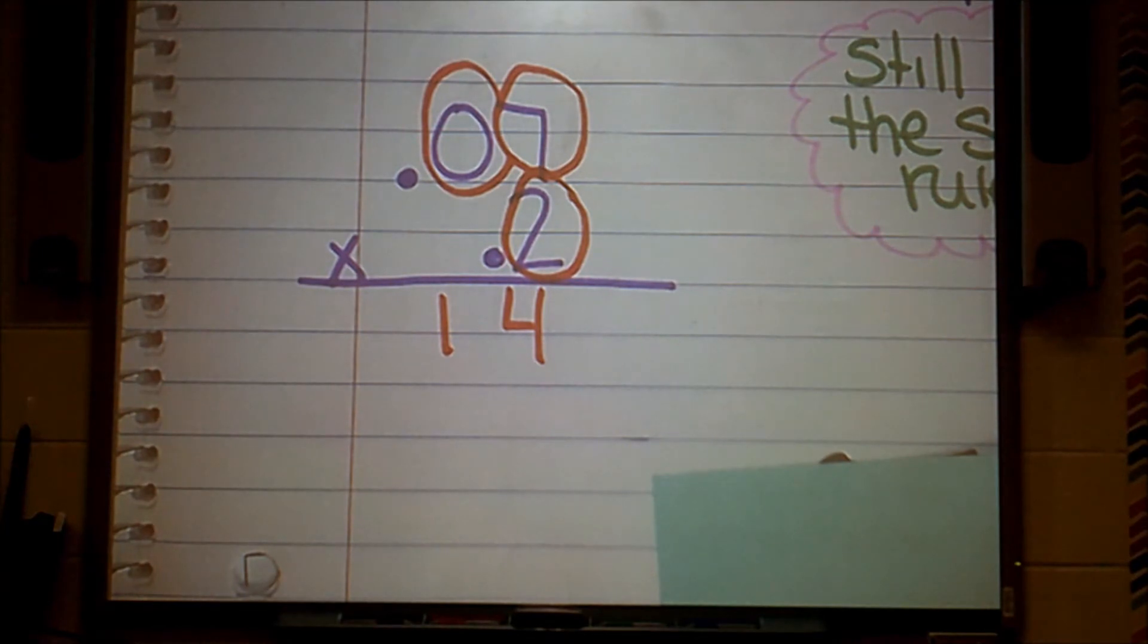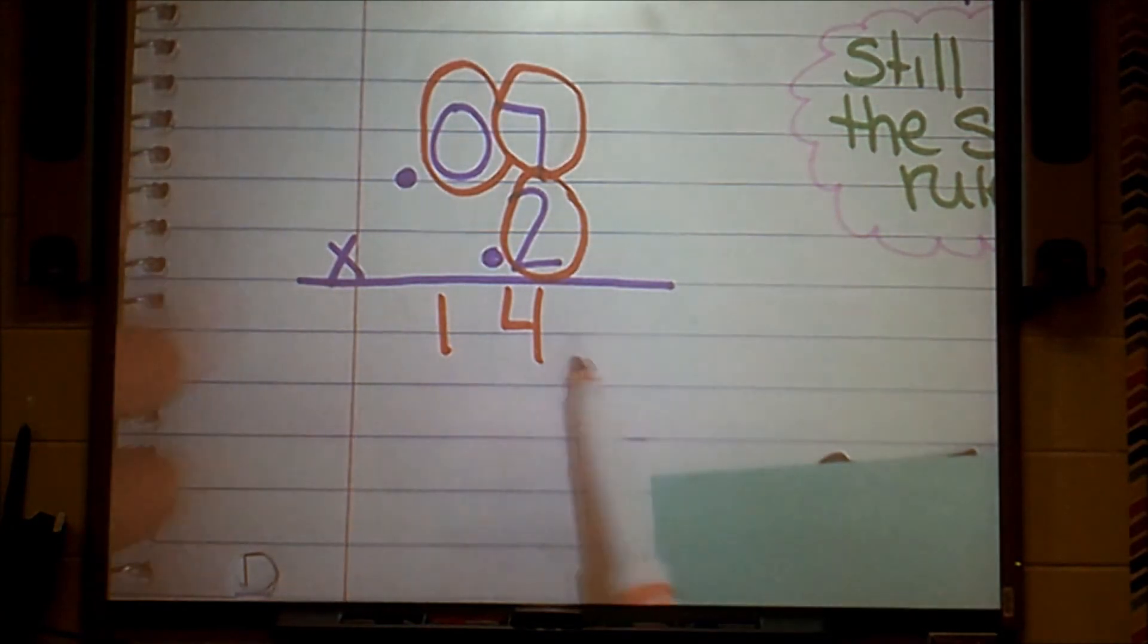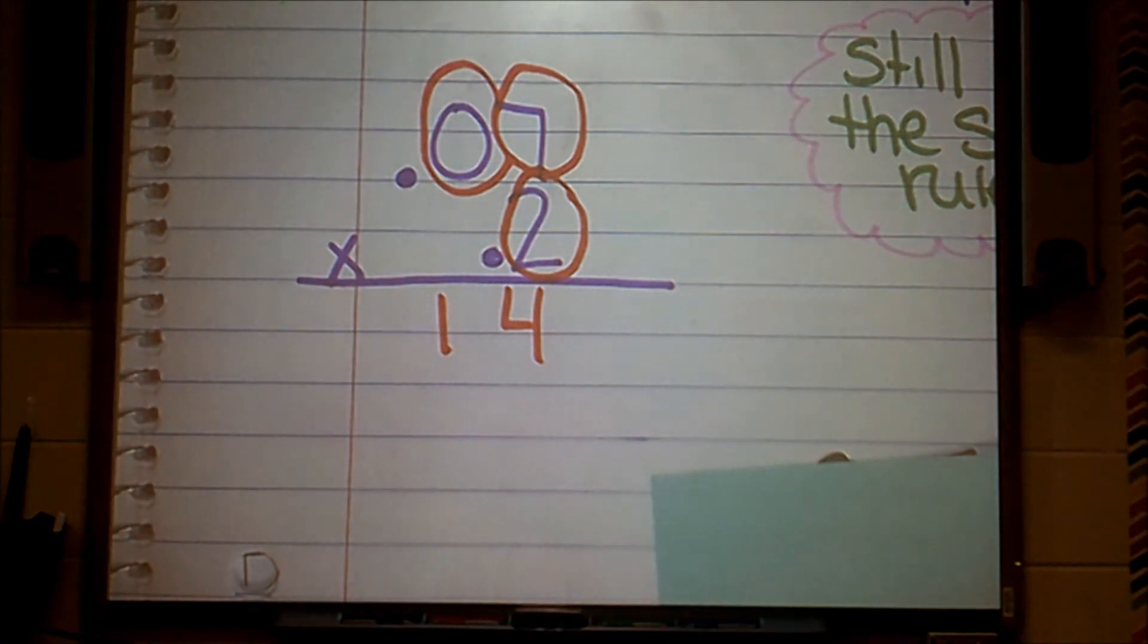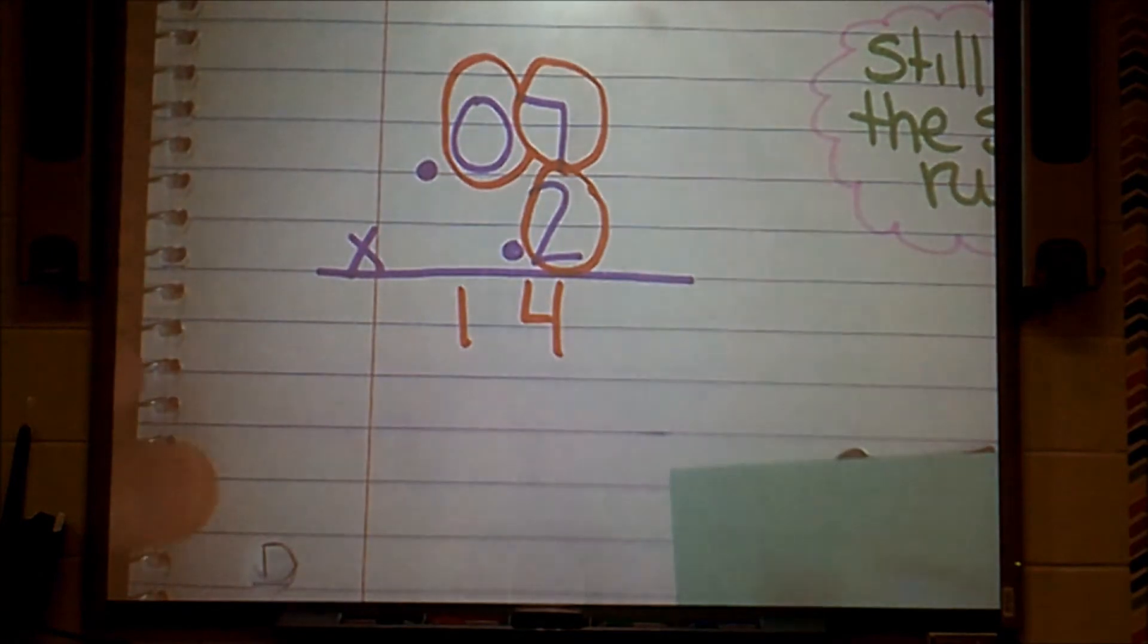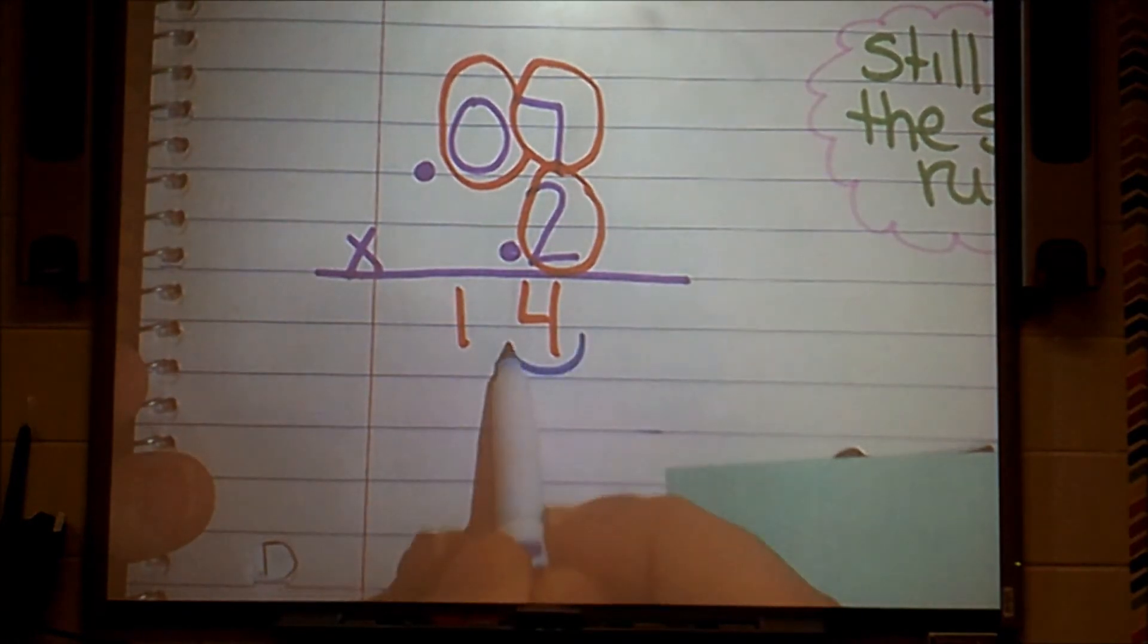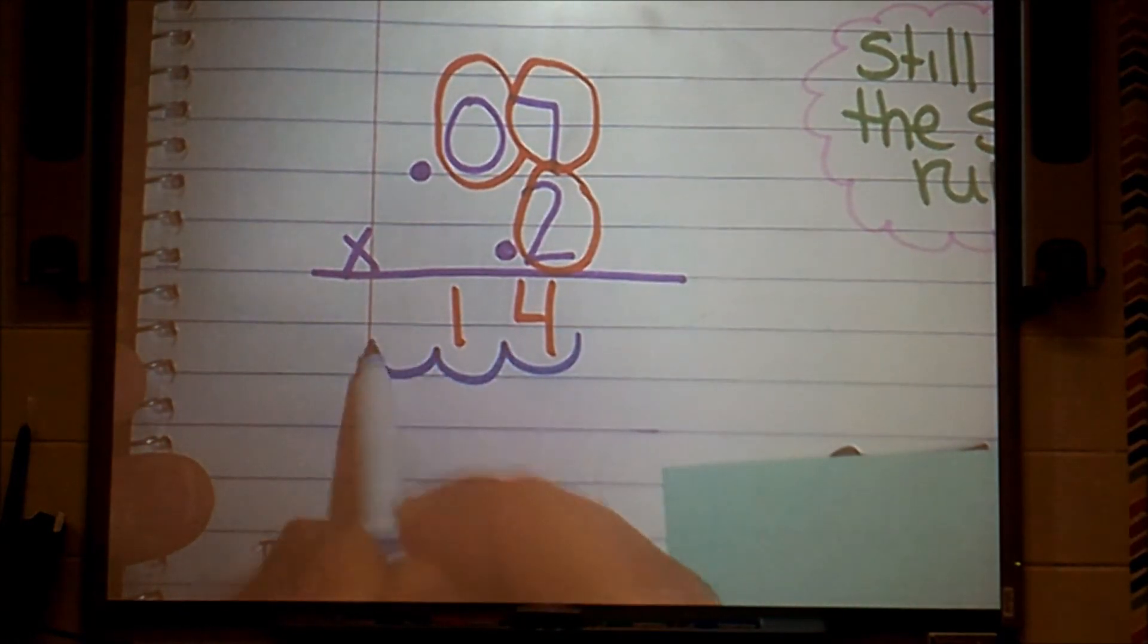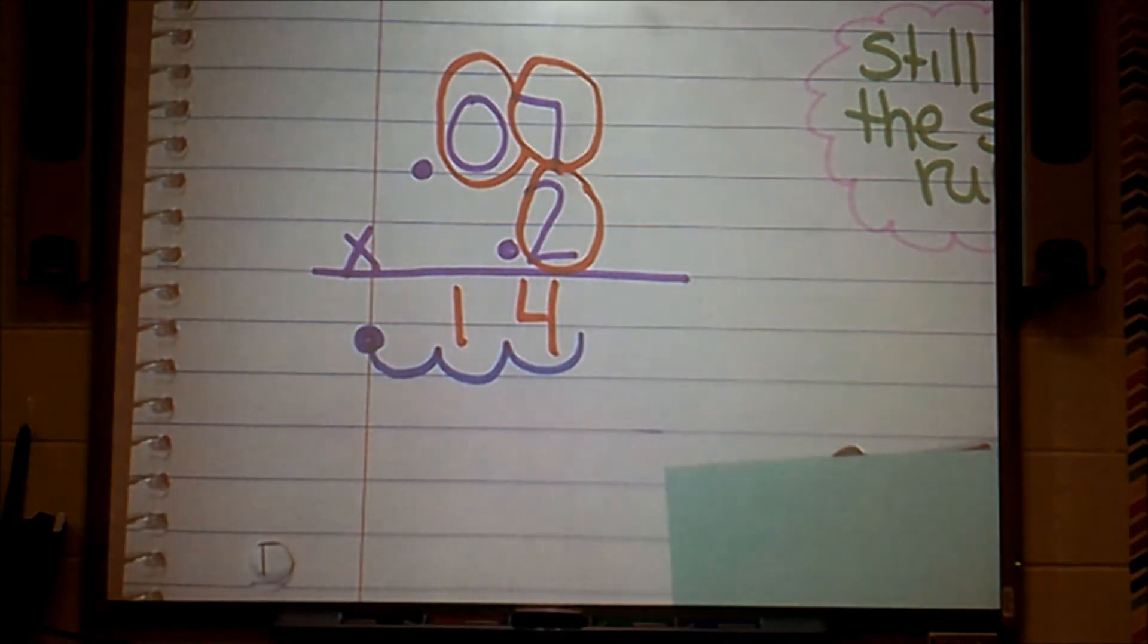But my product right now only has two. So I'm going to take and I'm going to bump my decimal three place values. We're going left. I'm going to bump it through my place values. One, two, three. My decimal's going to live there. Whether you like it or not, that's where my decimal's going to live.